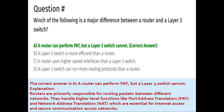Next question: which of the following is a major difference between a router and a Layer 3 switch? Option A: a router can perform NAT/PAT but a Layer 3 switch cannot. Option B: a Layer 3 switch is more efficient than a router. Option C: a router uses higher speed interfaces than a Layer 3 switch. Option D: a Layer 3 switch can run more routing protocols than a router. The correct answer is option A.